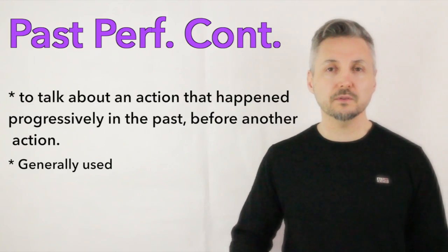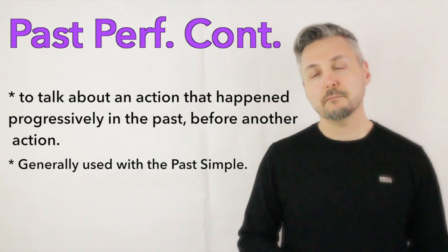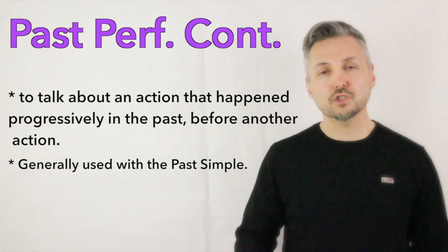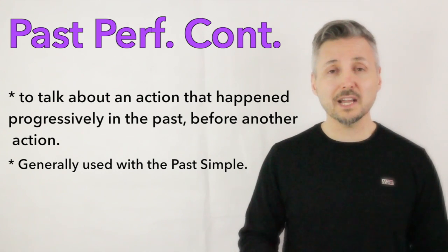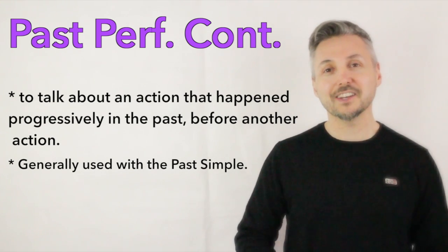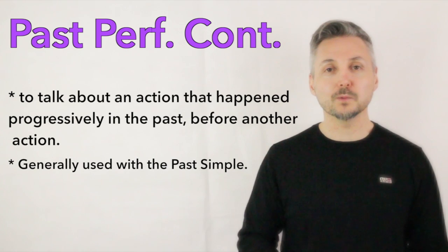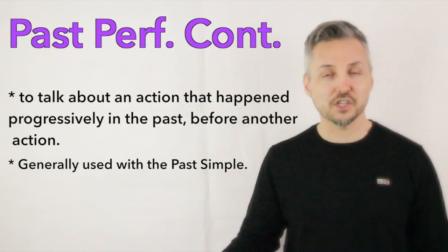Let's recap. Ho detto che il past perfect continuous si usa per un'azione che è successa interrottamente nel passato prima di un'altra azione nel passato. Ovviamente si usa sempre con il passato semplice.